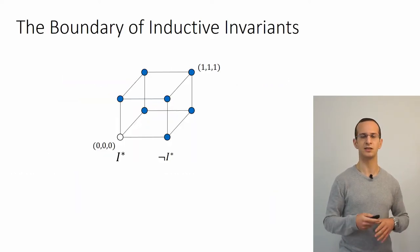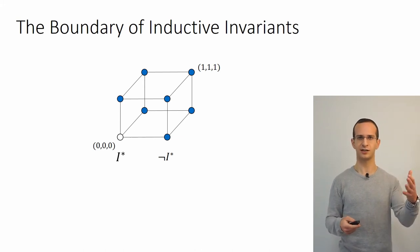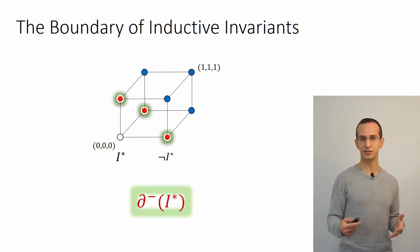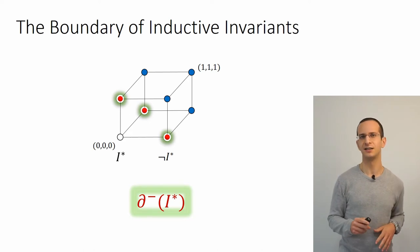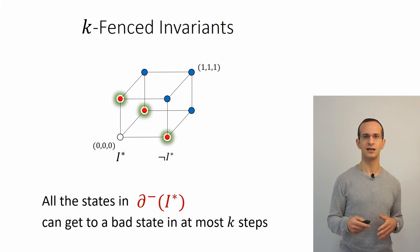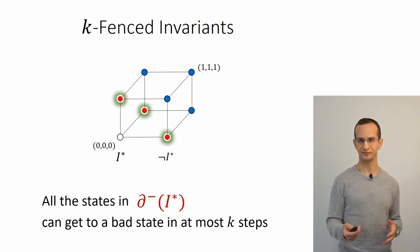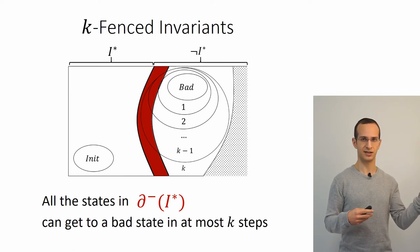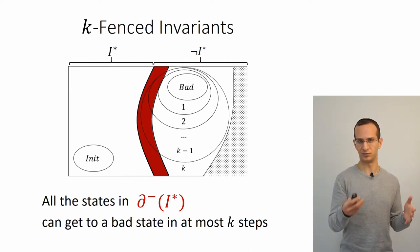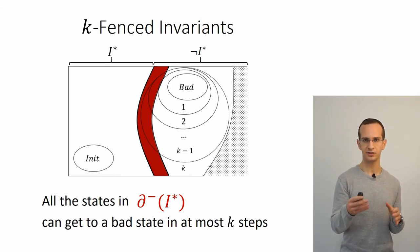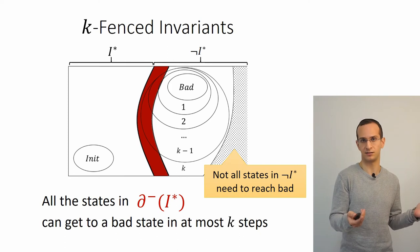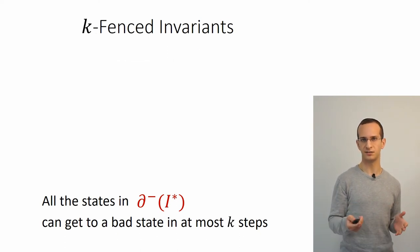We think about the state space of the system as vertices of the Boolean hypercube. If this is the invariant, these are the states in the boundary of the invariant: the states at Hamming distance 1 from the invariant, just outside it. The fence condition requires that these boundary states all can reach a bad state in at most k steps. Other states outside the invariant don't necessarily reach a bad state in k steps or at all.